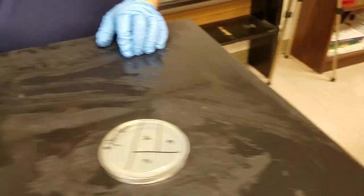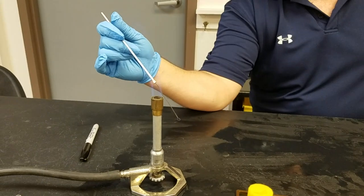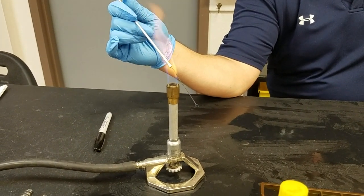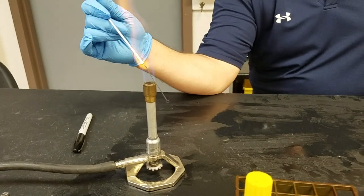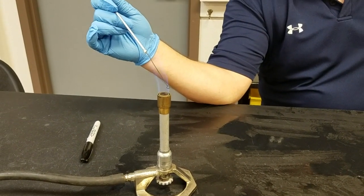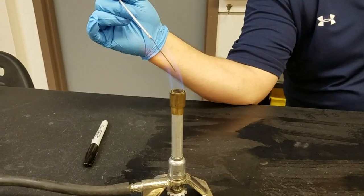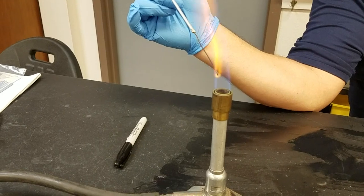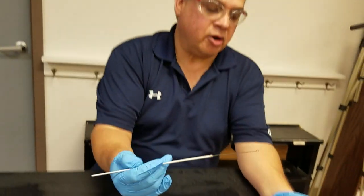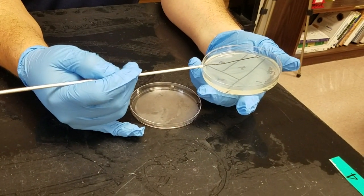Put that down, come back and flame the loop because remember, I'm not interested in the population on that loop - I'm only interested in the population that has been streaked on that first quadrant. So I'm going to flame this loop completely, get it really nice and orange and hot. It's hot, so I'm going to touch it to that area in the fourth quadrant to cool it down a bit.